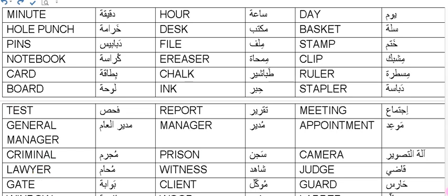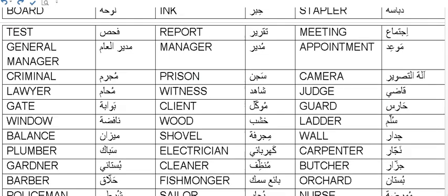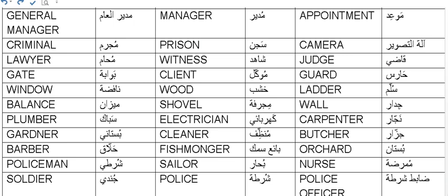Moham, lawyer. Haris, guard or security guard. Mawakkil, client. Bababa, gate - in the beginning I told you Bab is the door, and Bababa is gate. Sulam, ladder. Khashab, wood. Nafiza, window. Jidar, wall. Sitara we say to the curtain. Mijrafah means shovel. Mijan, balance. Najjar, carpenter. Kaharbai, electrician. Sabak, plumber.